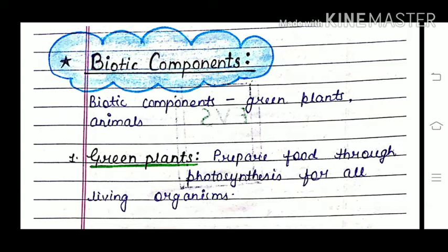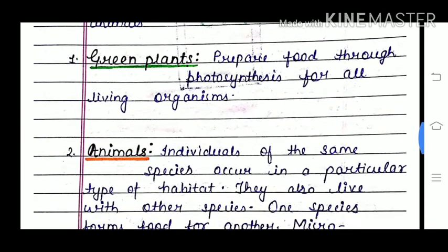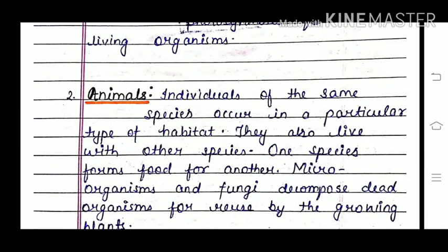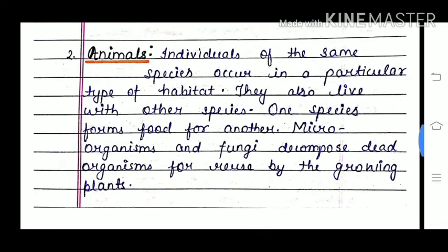Biotic components mean living components, i.e., green plants, animals, human beings, etc. Green plants prepare their food and give it to others. Individuals of the same species occur in a particular habitat and also live with other species. One species forms food for another. Microorganisms and fungi decompose dead organisms for reuse by growing plants.